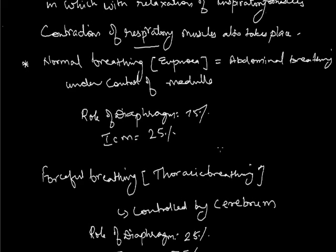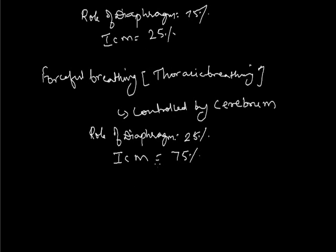During normal breathing, the diaphragm shows 75% movement, increasing lung volume so air fills the lungs, while intercostal muscles move only 25%. During forceful breathing, the diaphragm shows only 25% movement but the intercostal muscles show 75% movement. The next topic is Spirometry.